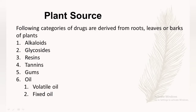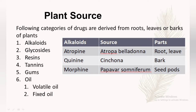In plant source, we can get medicines from several parts of plants such as roots, leaves, barks, fruits, and seeds. A few chemicals obtained from plants are alkaloids, glycosides, resins, tannins, gums, and oils — that is, volatile oil and fixed oil. Alkaloids are nitrogenous heterocyclic-based and pharmacologically active compounds composed of carbon, hydrogen, nitrogen, and oxygen. They are bitter in taste and often poisonous.